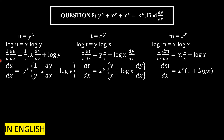Now take u to the right-hand side — it moves from the denominator to the numerator. Substituting the original value u = y^x, we get: du/dx = y^x · [(x/y)·(dy/dx) + log(y)].